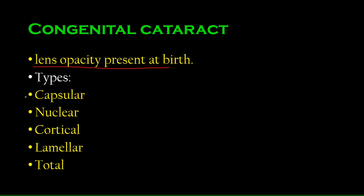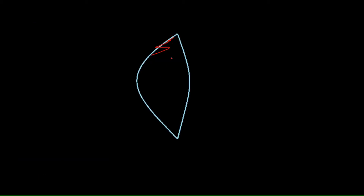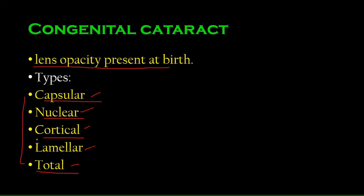The subtypes are: capsular, nuclear, cortical, lamellar, and total. We discussed capsular, nuclear, and cortical in the previous lecture. Total is easy to understand — the whole lens is opaque. There is another one called lamellar which we did not quite discuss yet.